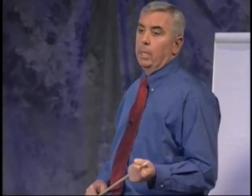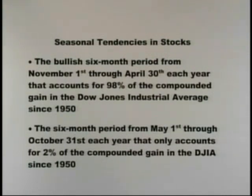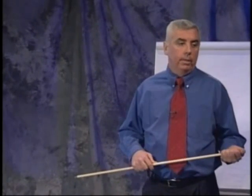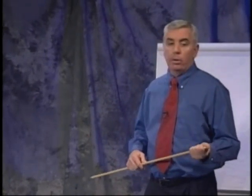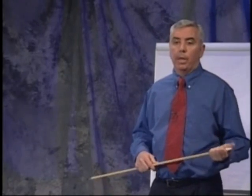We found a bullish period in stocks from around November 1st through April 30th each year. That six-month period accounts for 98% of the compounded growth in the Dow average since 1950. The flip side is the period from May 1st through October 31st, which accounted for only 2% of the compounded gain in the Dow. So there's a clear period when you want to be in long positions in stocks, and a period when you want to lighten up or be out of stocks.